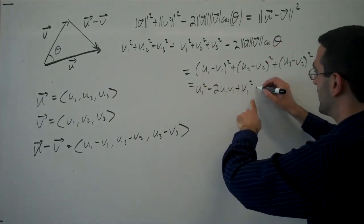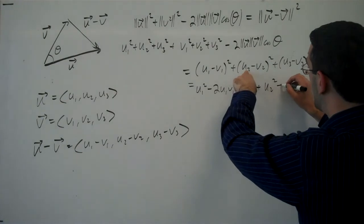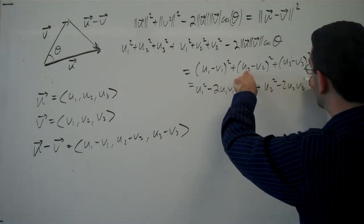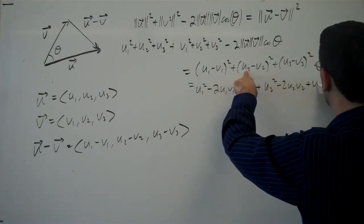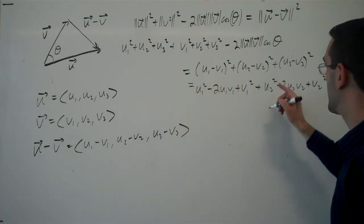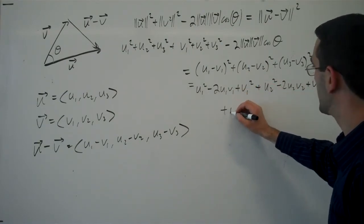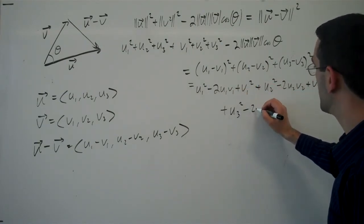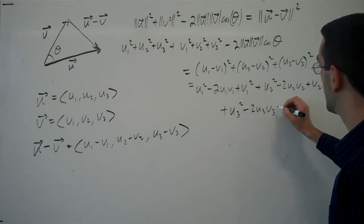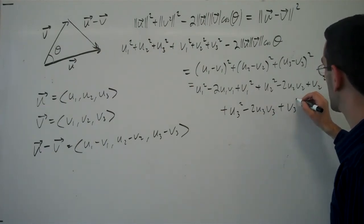Here, u2 squared minus 2u2v2 plus v2 squared. I'm running out of room. So plus u3 squared minus 2u3v3 plus v3 squared.